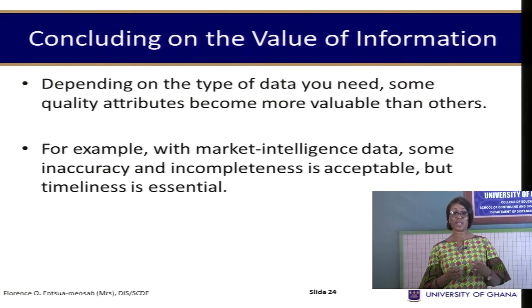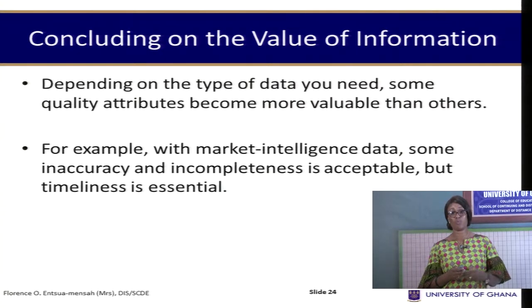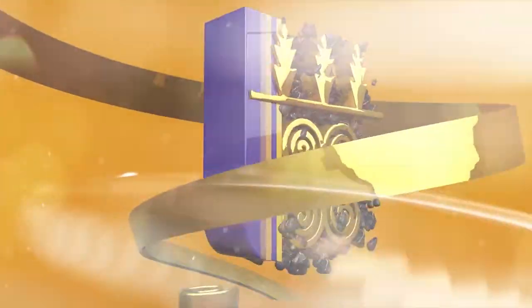To conclude, depending on the type of data you need, some quality attributes become more valuable than others. For example, with market intelligence data, some inaccuracy and incompleteness is accepted, but timeliness is essential. Wherever we look, information surrounds us — on road signs, in news, on televisions and computer screens. We spend much of our lives seeking information and deciding how to use it. In today's information age, it is now a tangible product we work with, making the ability to find and use information critical to professional success.